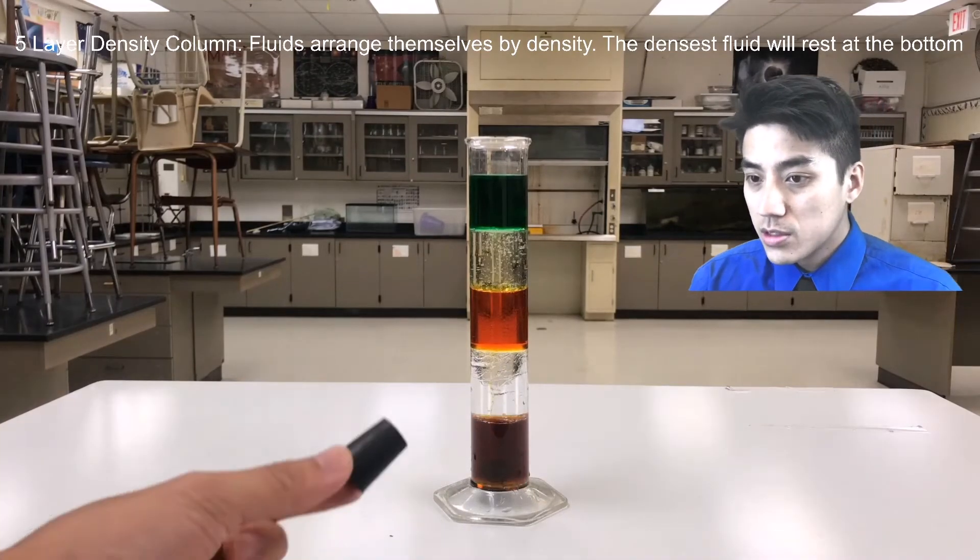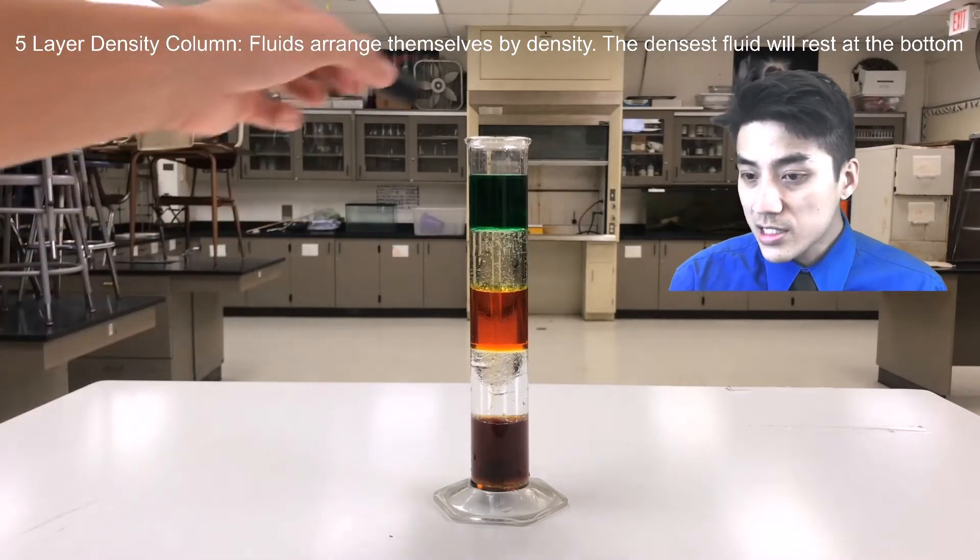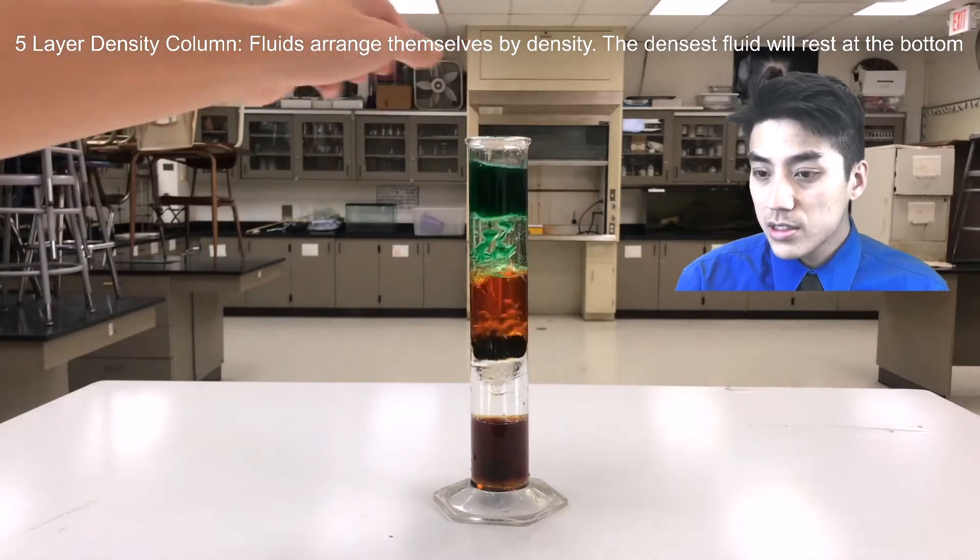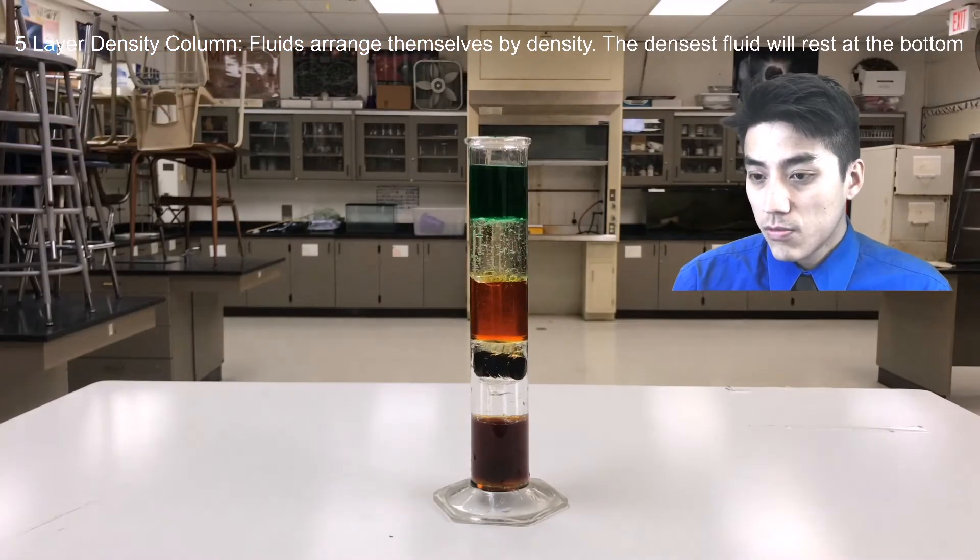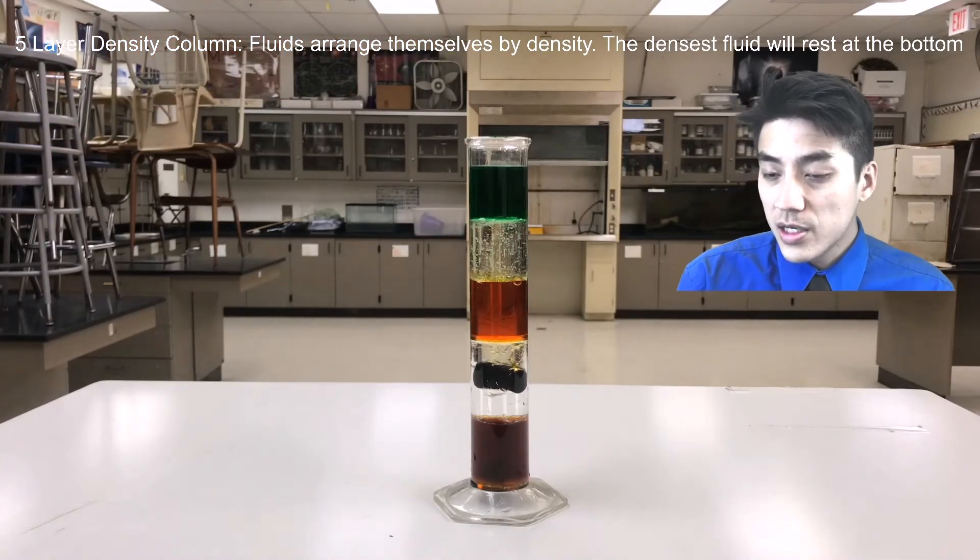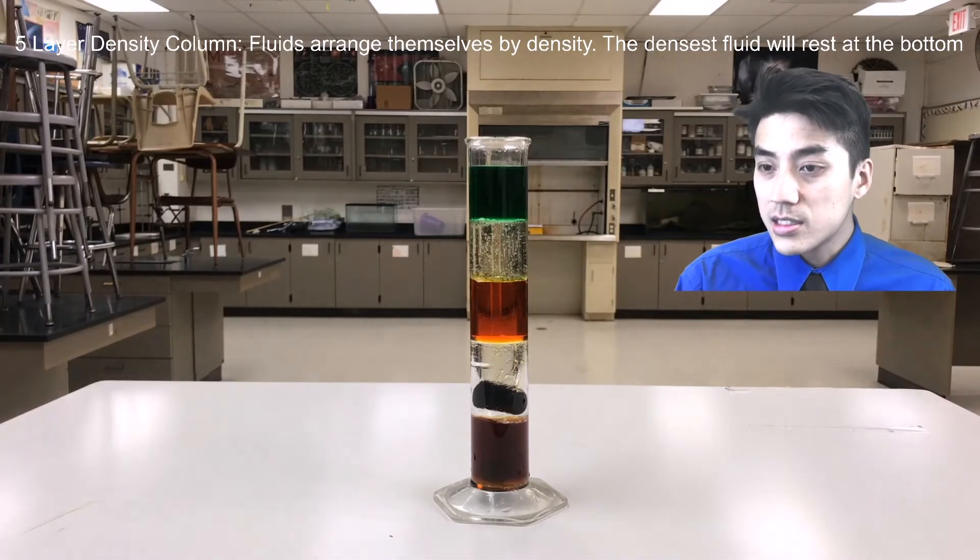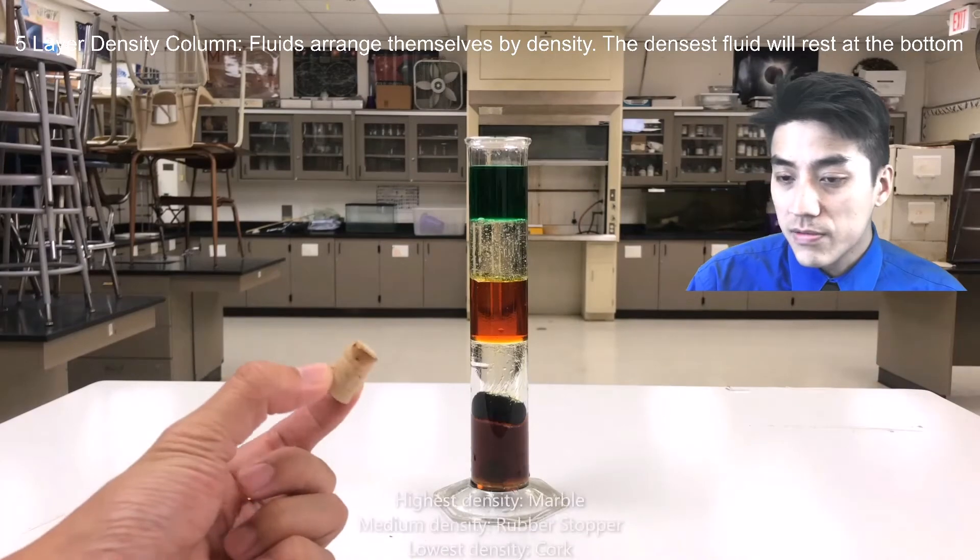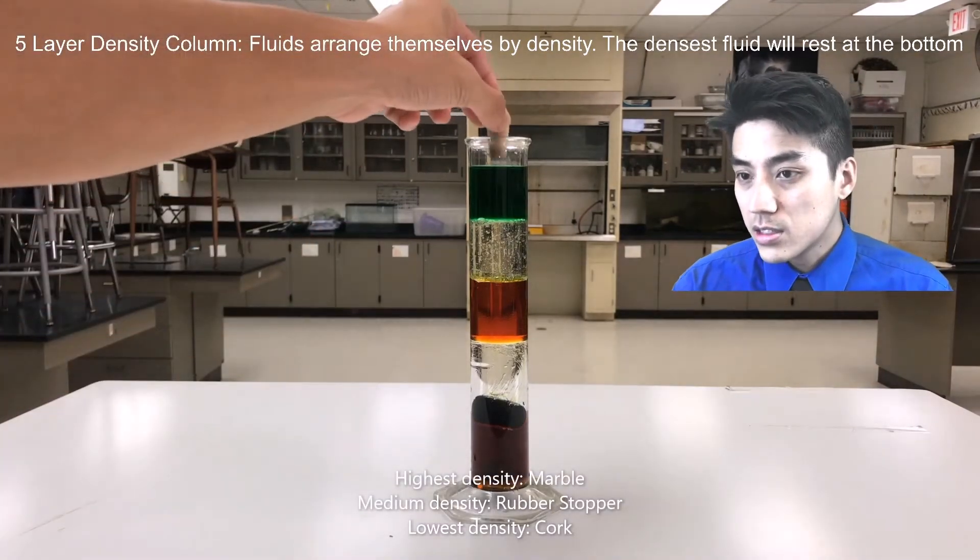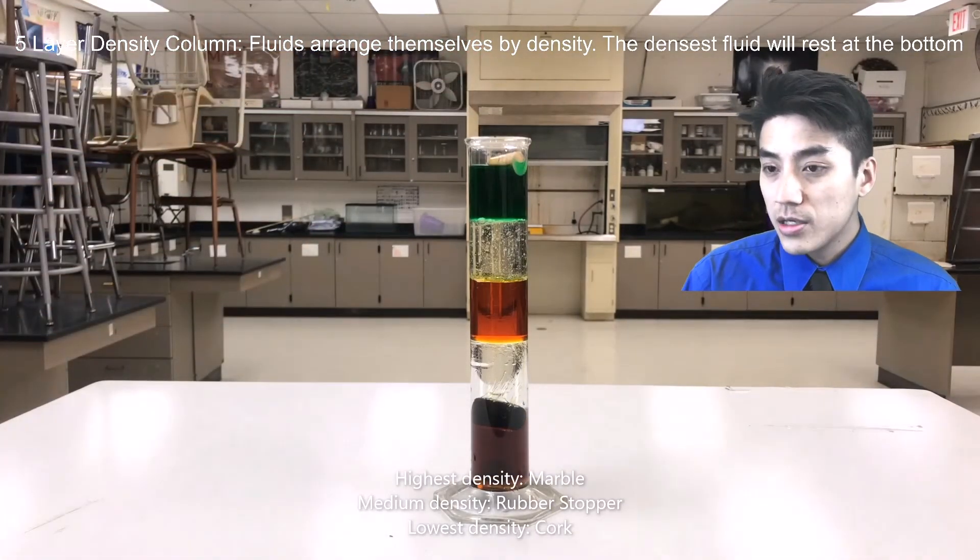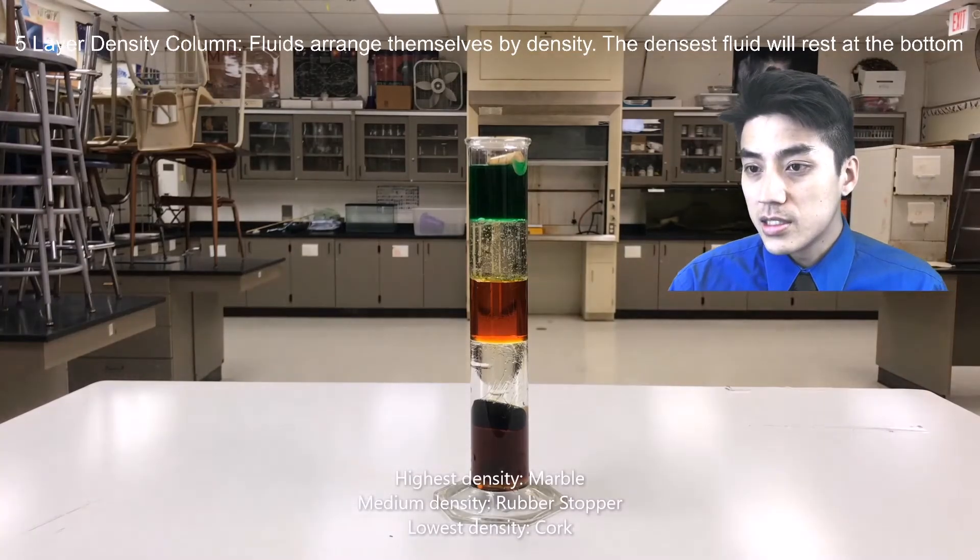I have marble, which goes in first. It's the densest. It will actually penetrate all the layers and go to the bottom. Rubber gets suspended in the glycerin layer, but it can't penetrate the corn syrup because it's not as dense as the marble. And last but not least, we have cork. The cork will actually just rest in the alcohol layer. It can't penetrate even alcohol because it's not dense.